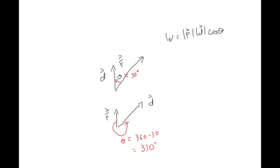For example, if theta measured one way was 30 degrees, then in the switched case theta would be 360 minus 30, which is 330 degrees. Or measuring the other way you'd get negative 30 degrees. Plugging either negative 30 or 330 into cosine gives the same result, but positive 30 would give the wrong answer. Be careful about how you measure theta.